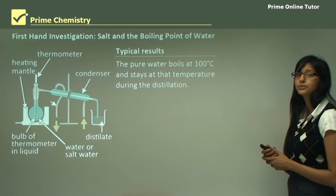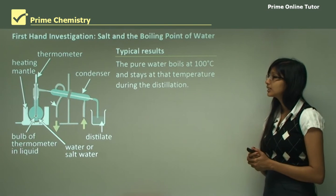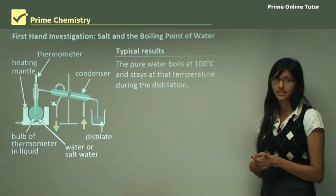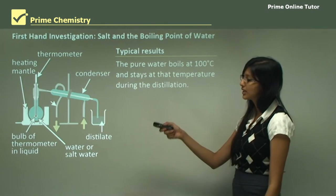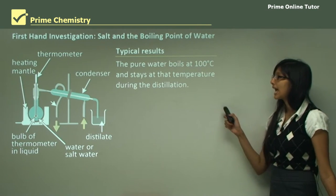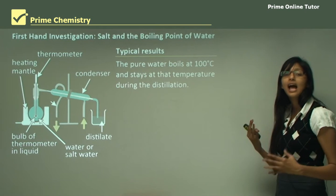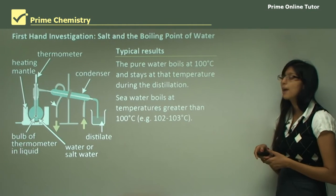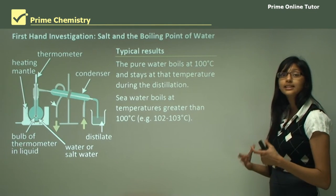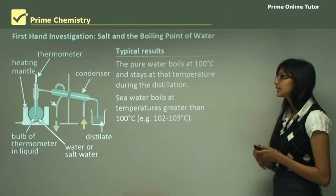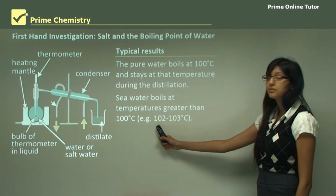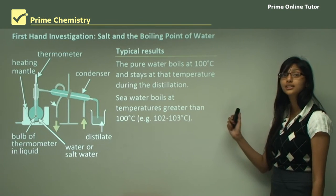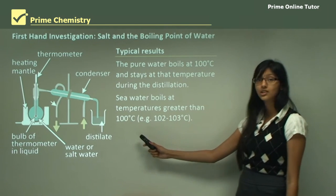What are the typical results we will find? Pure water boils at 100°C and stays at that temperature during the distillation. When you are testing sea water, which has salt dissolved in it, the temperature gets greater than 100°C — around 102 or 103°C. So when you add salt to water, the boiling point increases to more than 100°C.